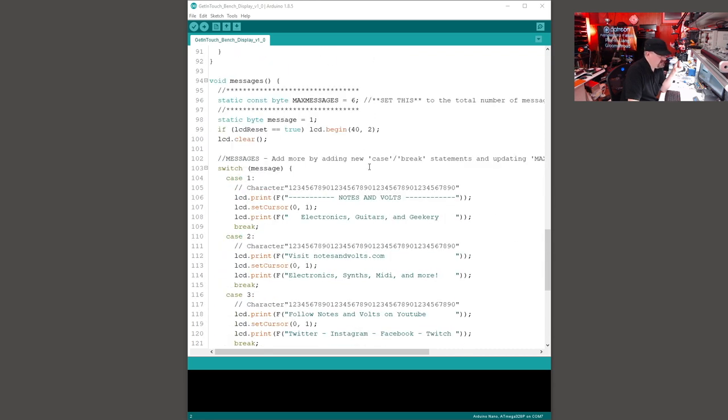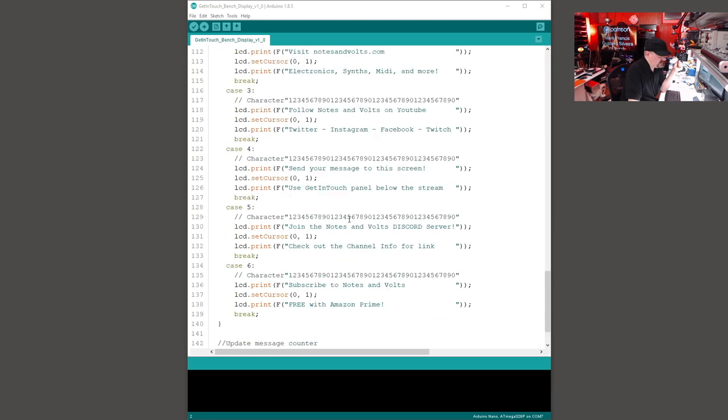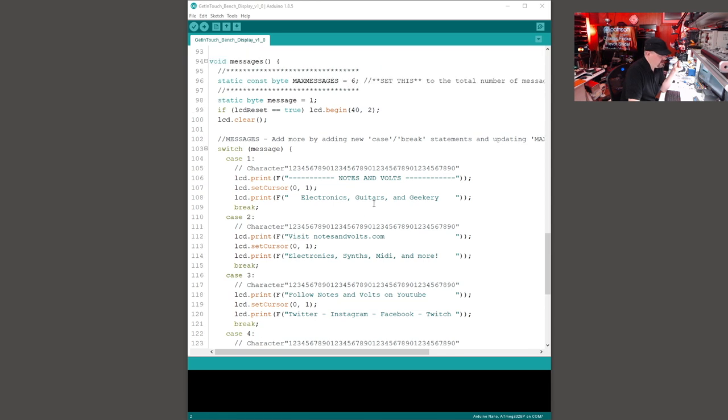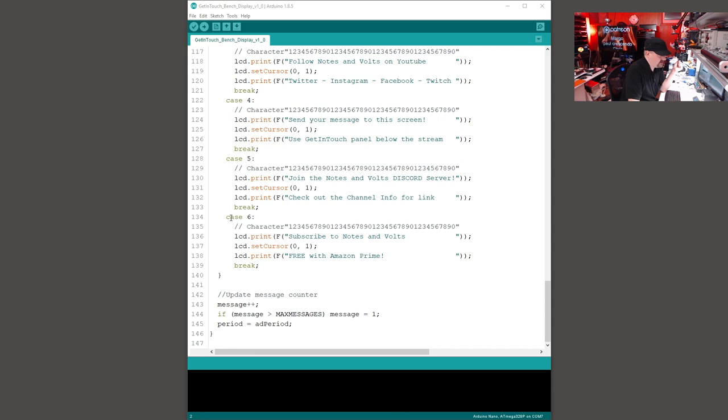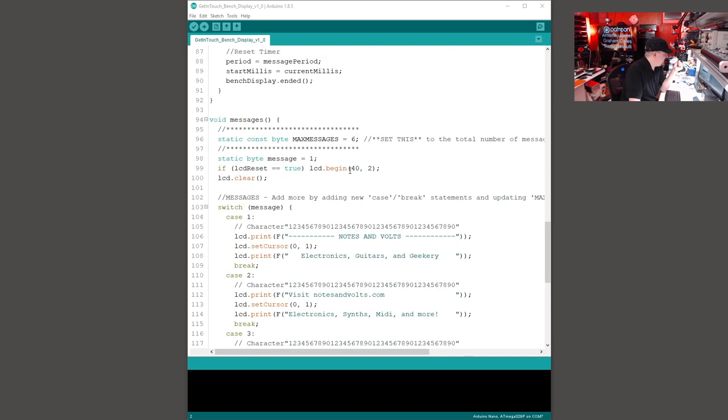If you go down to the message section, this is where you can add your custom messages. So you can just change these lines to be whatever you want. But right now I have six different messages that will cycle through. If you want to add more messages, just add a new case statement. So case seven, and then copy all this stuff and then just change your messages and then go up to max messages and set this to be the maximum number of messages you're using. So in this case, I would set it to seven. And that's about it. It's a pretty simple program.